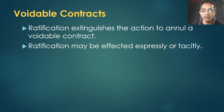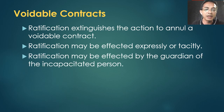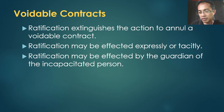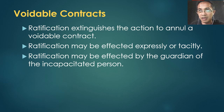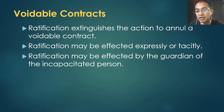Ratification may be effected expressly or tacitly — it may be express or implied. Ratification may also be effected by the guardian of the incapacitated person. So the guardian of the minor or the insane person who entered the contract can ratify it.